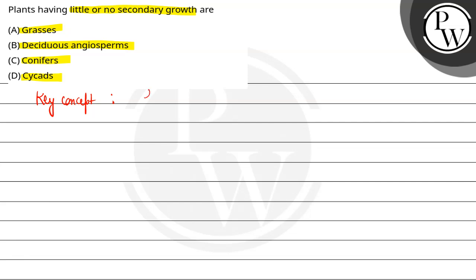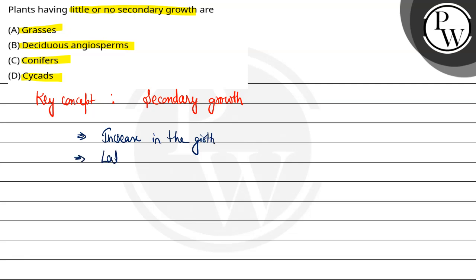Secondary growth — plant ki jo girth hoti hai, us me increase hota hai. So there is increase in the girth, and yeh hota hai because of the lateral meristem.